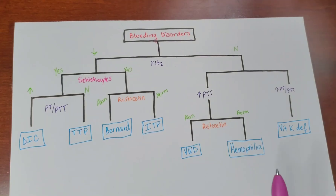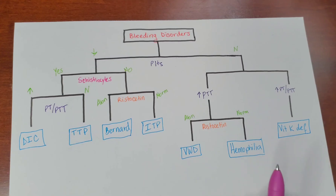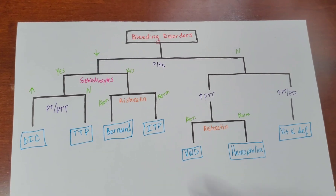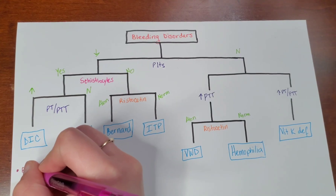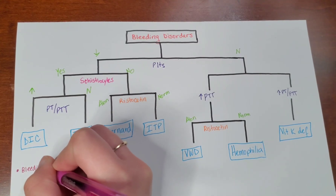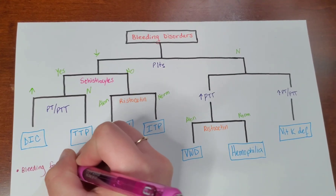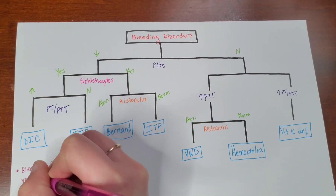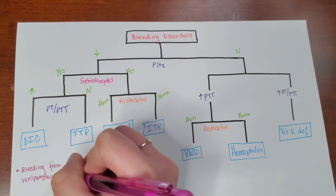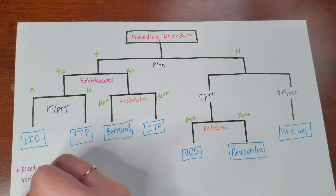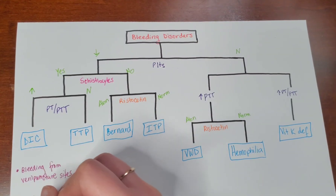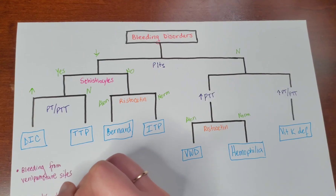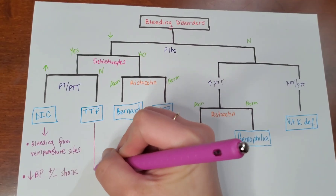Now I'll briefly tell you a few descriptors that you see on the test that might allow you to pick these up if you don't remember this algorithm. For DIC, you might see bleeding from venipuncture sites, and you might see some hypotension with or without shock.